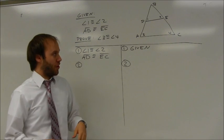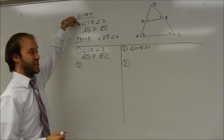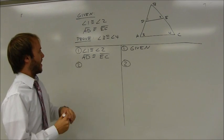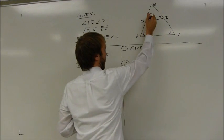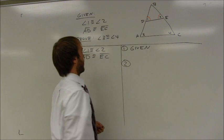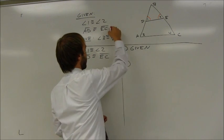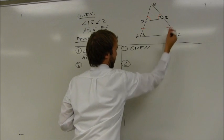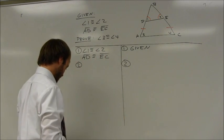I'm going to analyze this proof. The first thing I'd like to do is take a look at my givens. Angle 1 is congruent to angle 2, so I'm going to mark those two angles congruent. I'm also told that AD is congruent to EC, so I'm going to mark those two segments congruent.